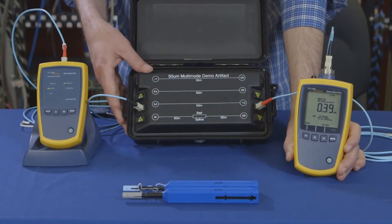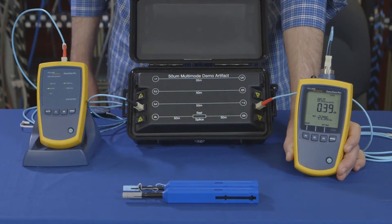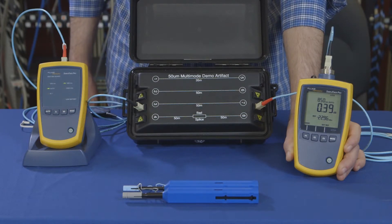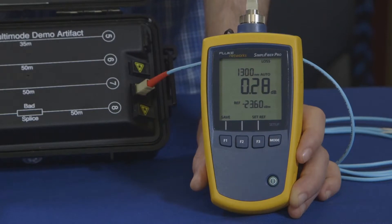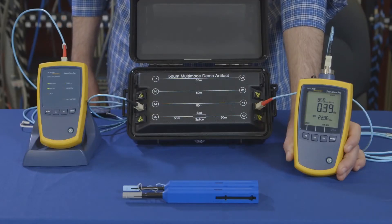After cleaning and inspecting our fiber under test, we connected the light source and the power meter and are ready to take our measurement. You'll notice the source is alternating between 850 and 1300 nanometers, giving you both wavelengths in one result.